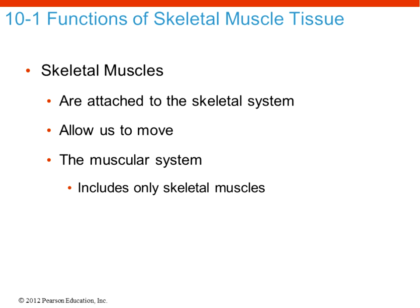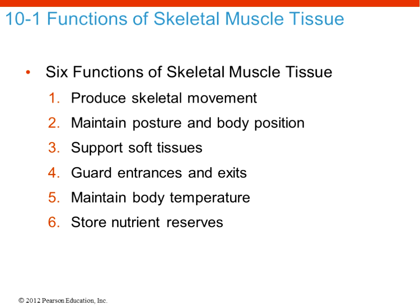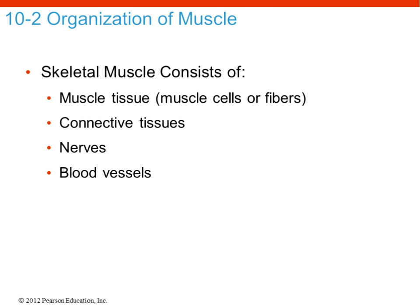Skeletal muscle is attached to our bones and allows movement, but also has other functions: maintaining posture, supporting soft tissues, and guarding entrances and exits. It also helps maintain body temperature — when muscles contract, they produce heat, such as in shivering thermogenesis. Muscle can also store nutrient reserves; the storage form of glucose is glycogen, giving muscle a great capacity to take sugar out of the bloodstream.